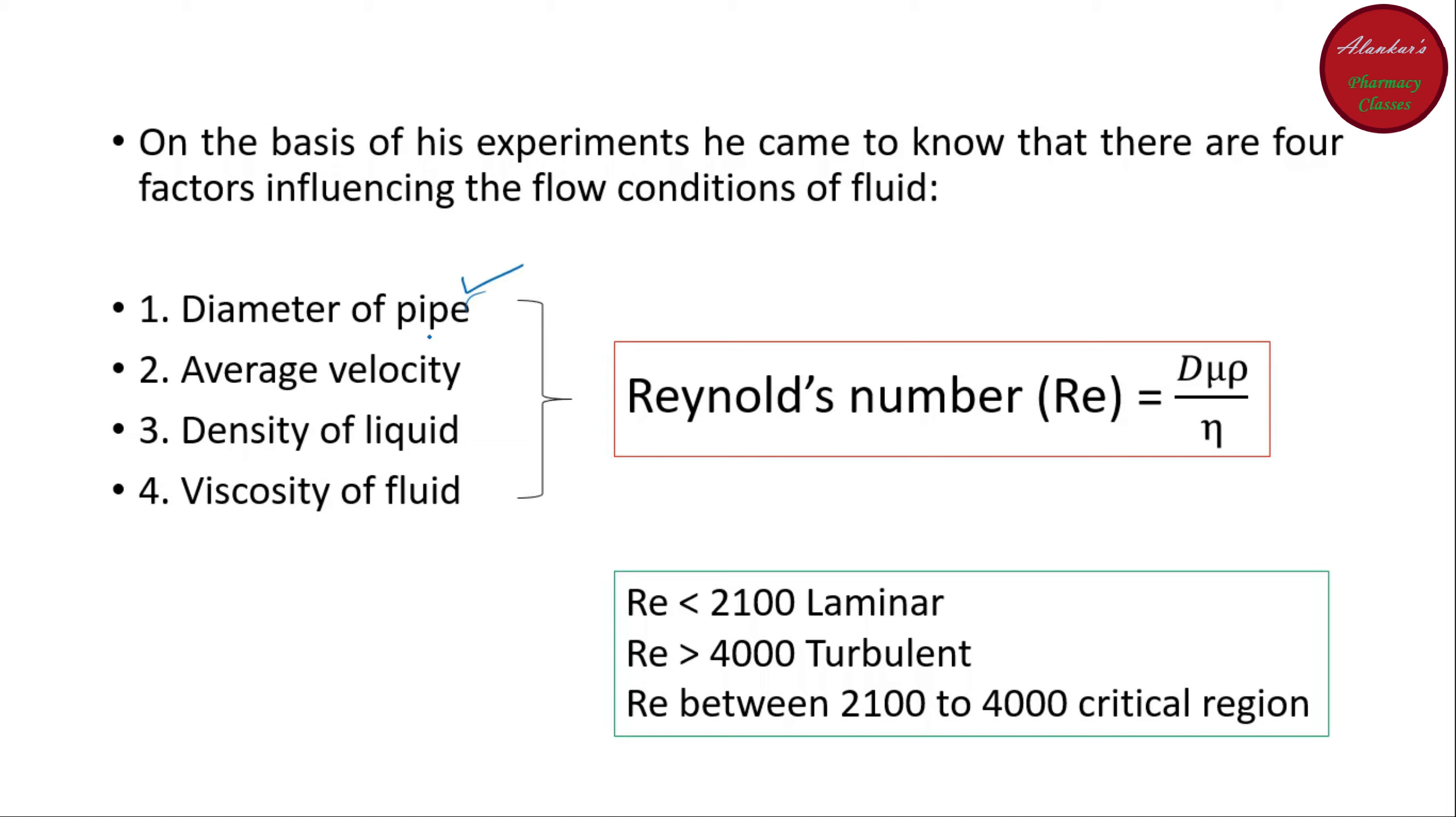The first factor is the diameter of pipe. Another factor is the average velocity. Third factor is the density of liquid. And the fourth one is the viscosity of fluid. And out of which, he derived an equation which is nowadays known as Reynolds number. That is equal to d diameter of the pipe. Mu is the average velocity of the liquid. Rho is the density of liquid. And finally, this eta is the viscosity of fluid.